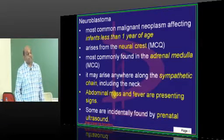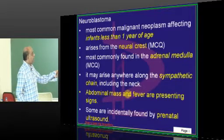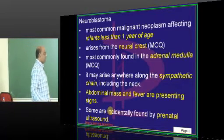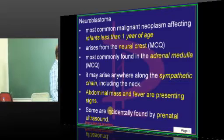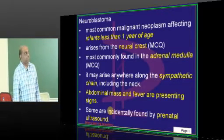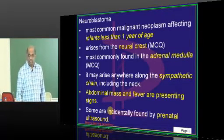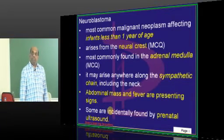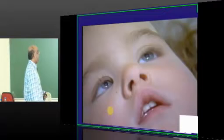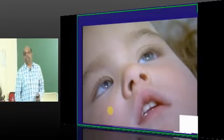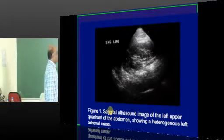How does it clinically present? Abdominal mass and fever are the presenting features. In fact, in few scenarios, prenatal antenatal ultrasound may detect it. Neuroblastoma in less than 1 year of age is very important to remember.